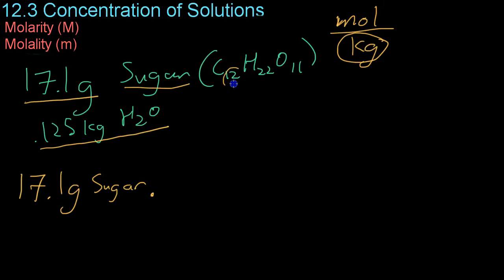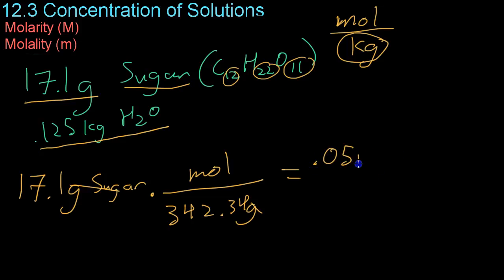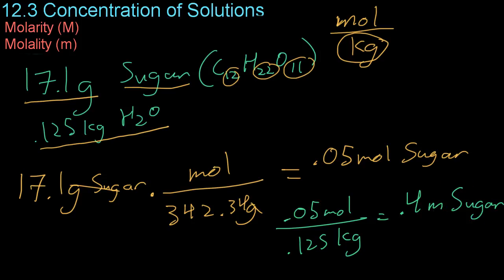Now, once you add up all the carbons and hydrogens and oxygens that are within this sucrose molecule, you get a molar mass of 342.34 grams for each mole. Now, you cancel the units, and you end up with 0.05 moles of sugar. And then, it's just a simple division problem from there. You take the 0.05 moles of sugar over the 0.125 kilograms of water, and you end up with a 0.4 molal solution of sugar in water.